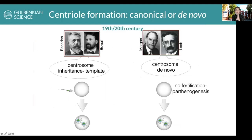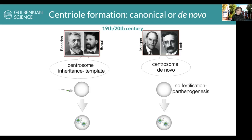Some of these are old questions. Van Beneden and Boveri were already discussing how the centrosome is formed, suggesting it is an inherited structure. At fertilization, the egg does not have centrosomes — it is the sperm that brings in a centrosome needed so the new organism forms with centrosomes. However, it was also known that certain organisms can develop without fertilization, so-called virgin birth, where you have development without fertilization, suggesting centrosomes could form de novo without a template.